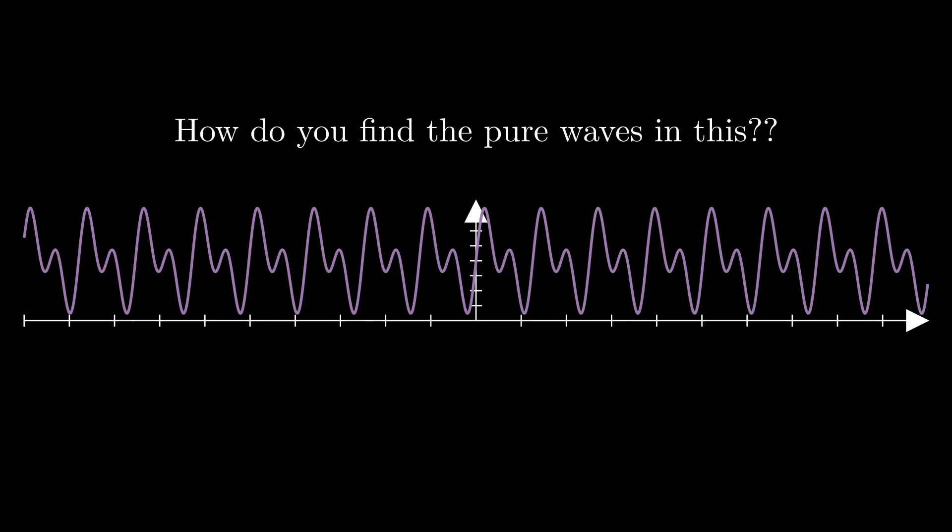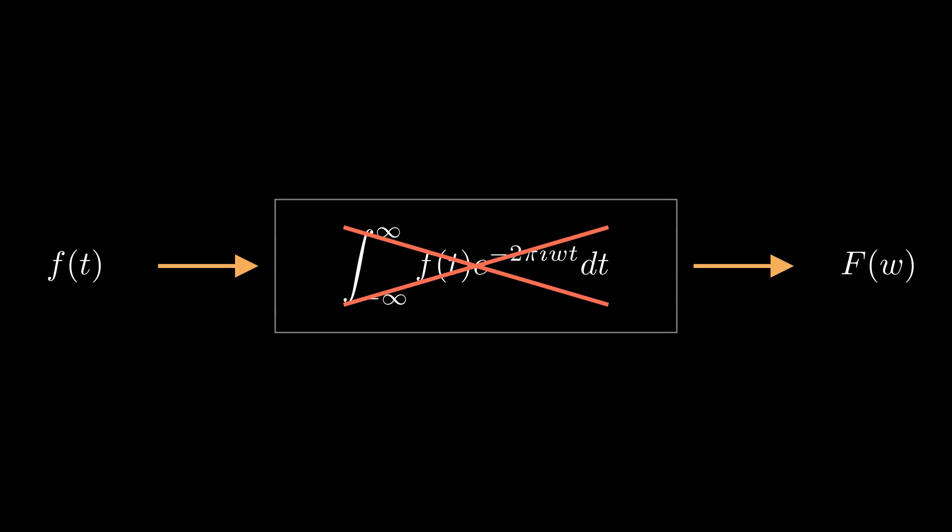Well the answer lies in a Fourier transform. Now what a Fourier transform does is that it takes a function as an input and puts out another function as an output. Now do not worry about the center part. Just think of it as a given. The main part to understand is that it takes a function as an input and puts out a different function as an output.